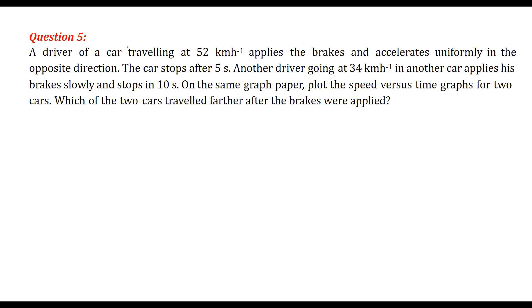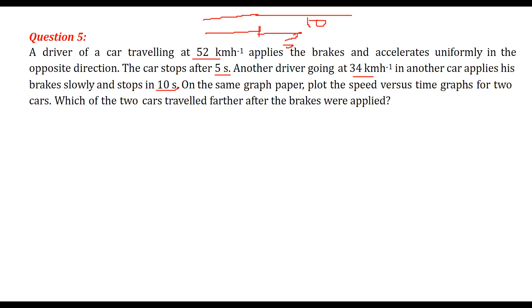A driver of a car travelling at 52 km per hour applies the brakes and decelerates uniformly. The car stops after 5 seconds. Another driver going at 34 km per hour applies his brakes slowly and stops in 10 seconds, which is double the time.